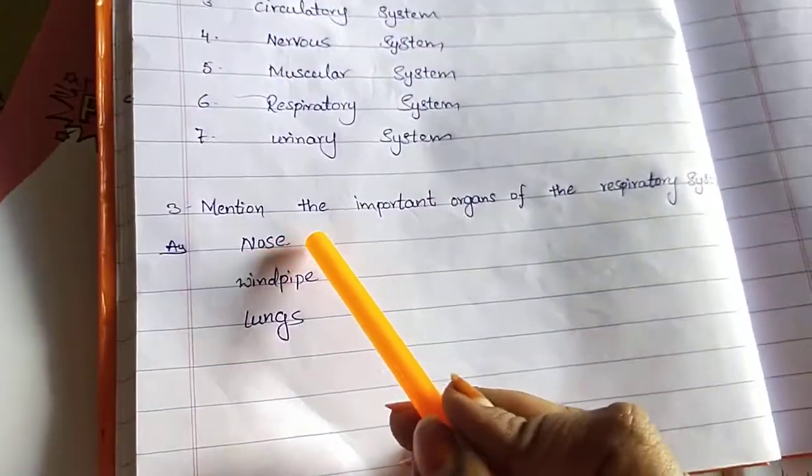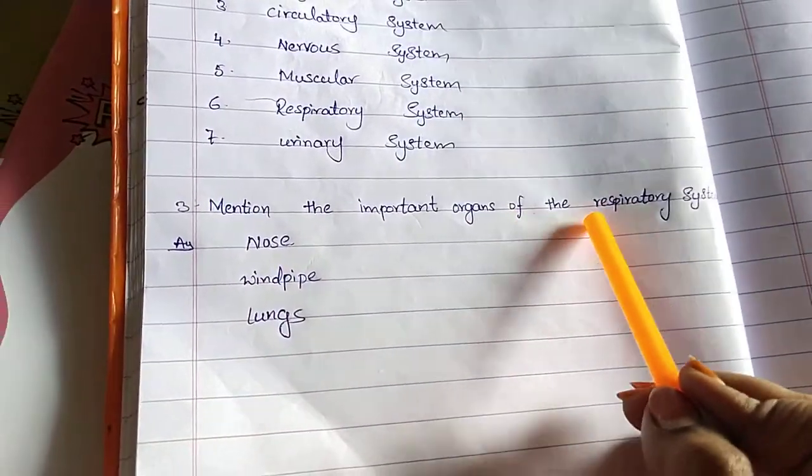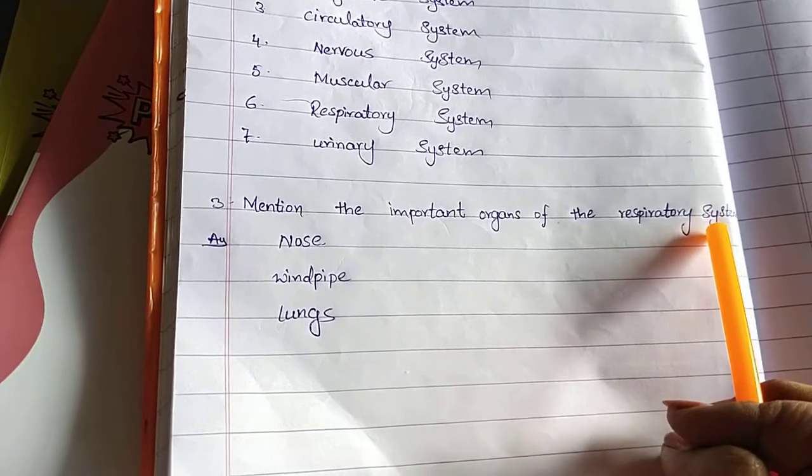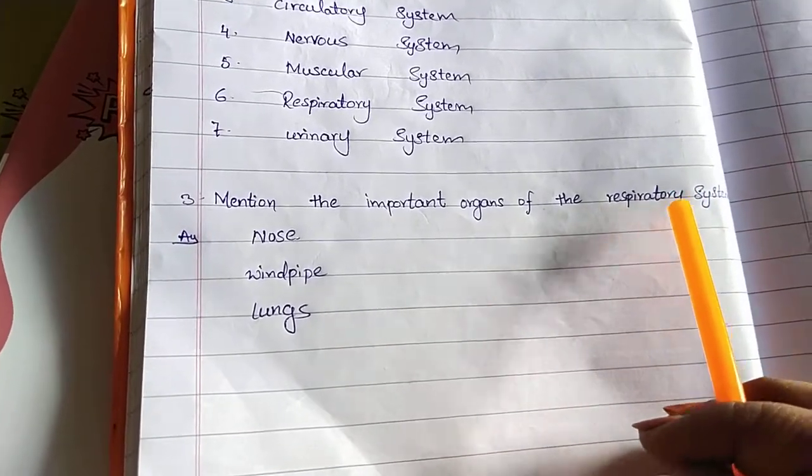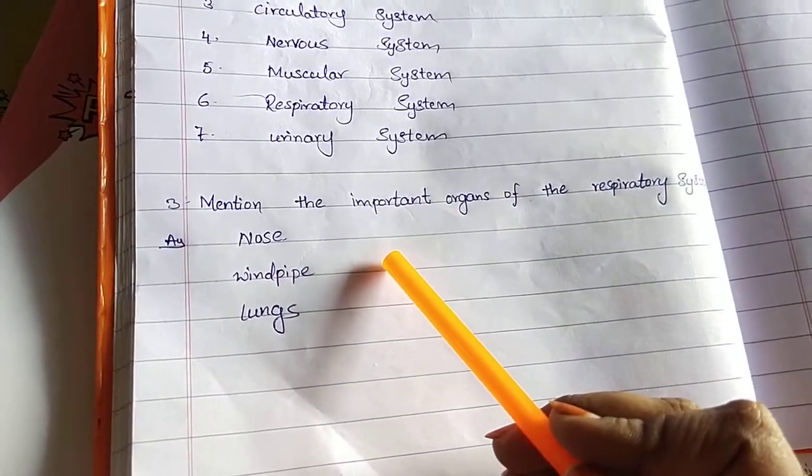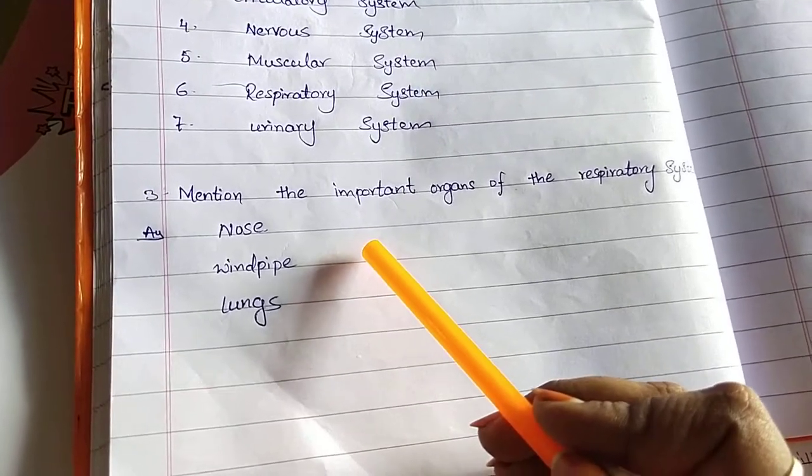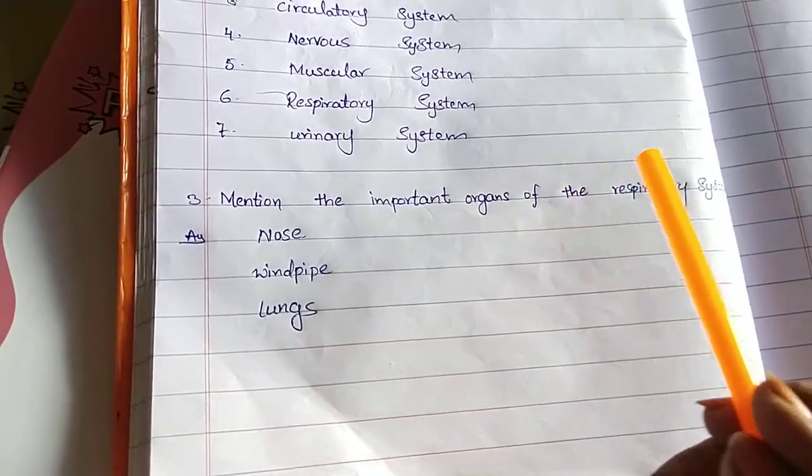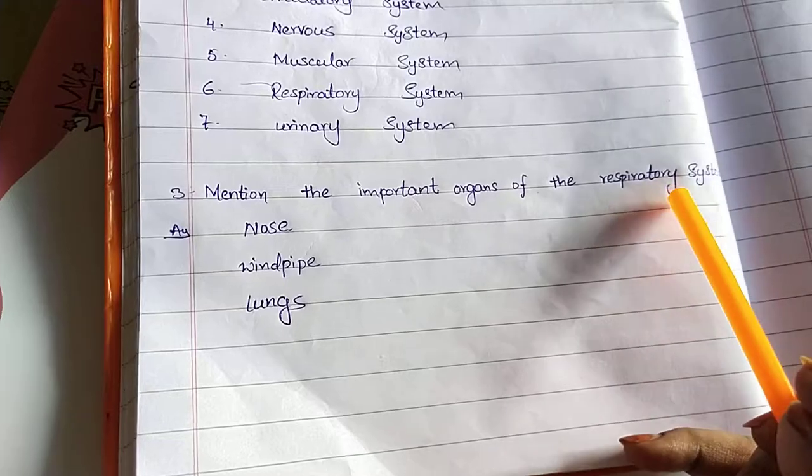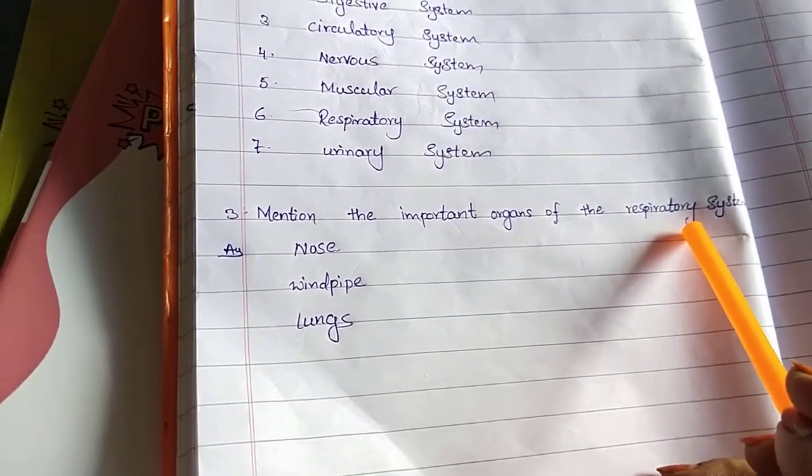Third question, mention the important organs of the respiratory system. You know already, every system has some parts, some organs they are having. So that type of systems already we know. So here they are asking respiratory system. In respiratory system we are having the organs: